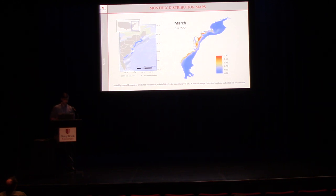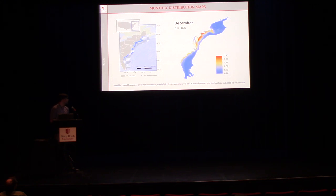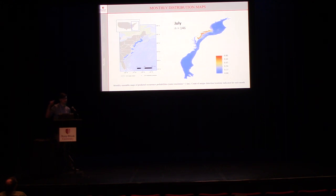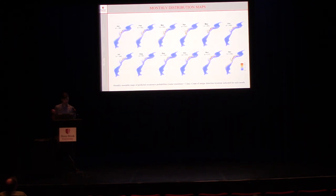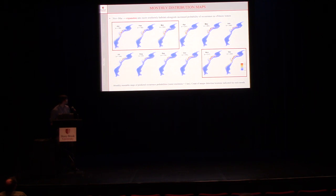Finally, through all the modeling, we get to the part most important to management: those monthly ensemble distribution maps. We're seeing predicted occurrence probabilities of Atlantic Sturgeon throughout the entire outer continental shelf at a one-kilometer raster resolution. Red means higher predicted occurrence; blue means lower predicted occurrence. The number scrolling underneath each month tells you just how small the sample sizes are that we're relying on to make these broad predictions. These side-by-side monthly maps let you look at changes in distribution and the spatiotemporal trends of what these fish are doing throughout this extent.